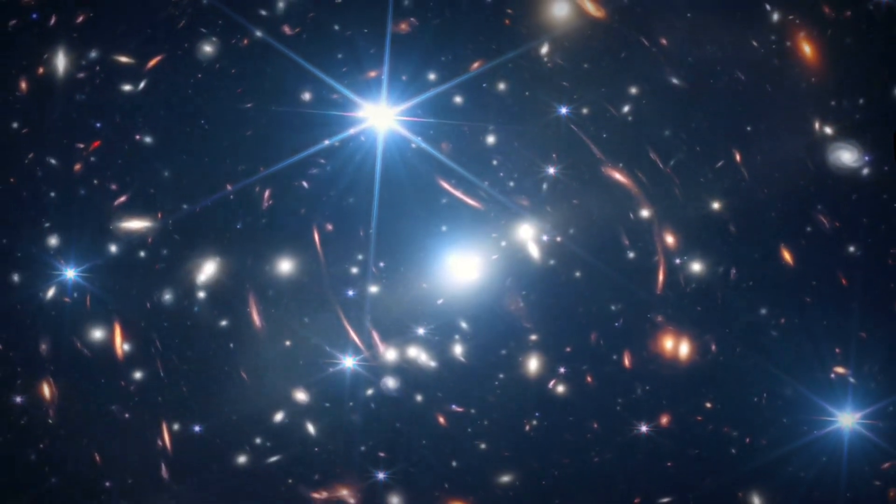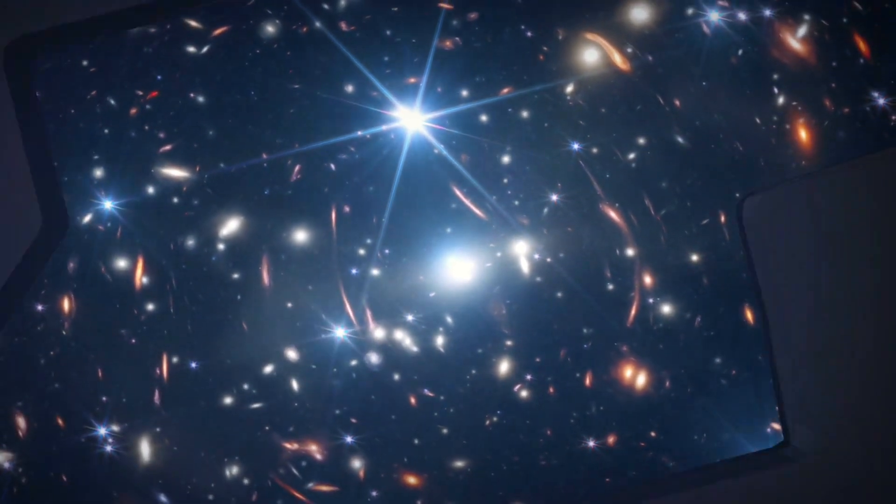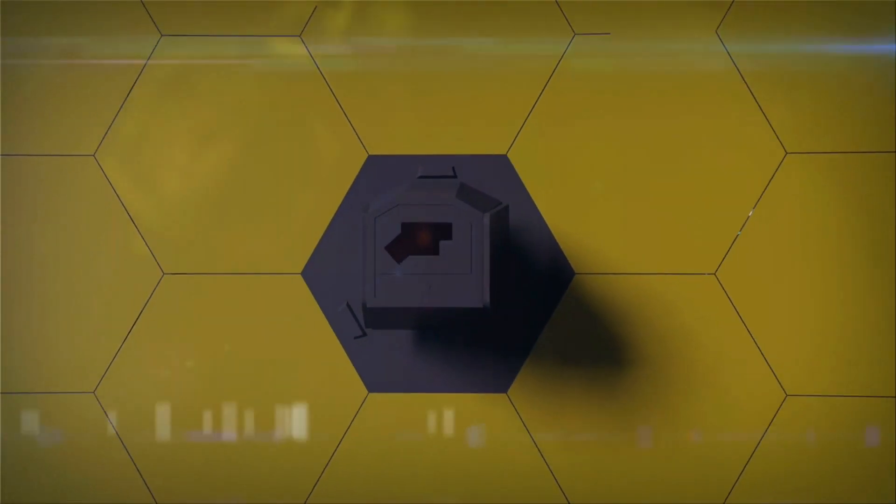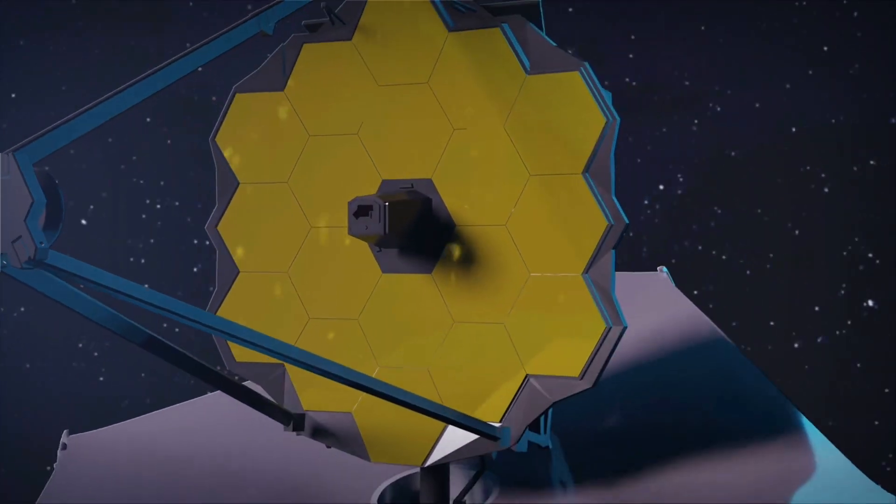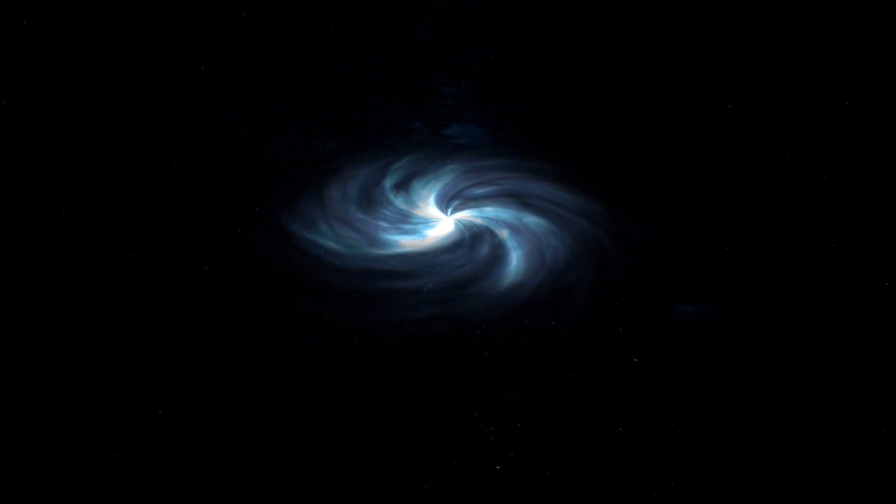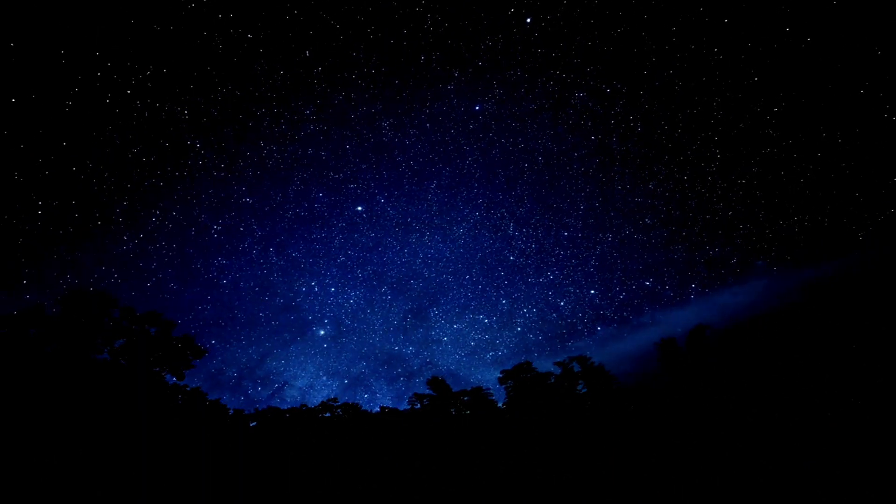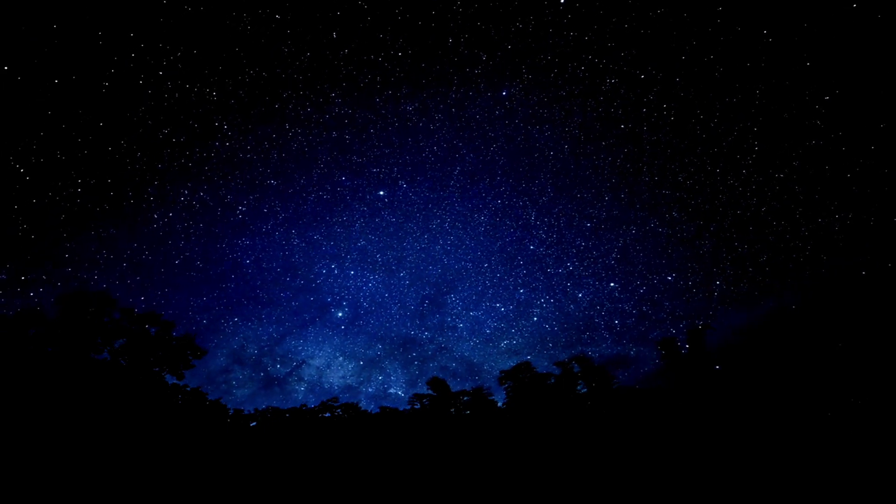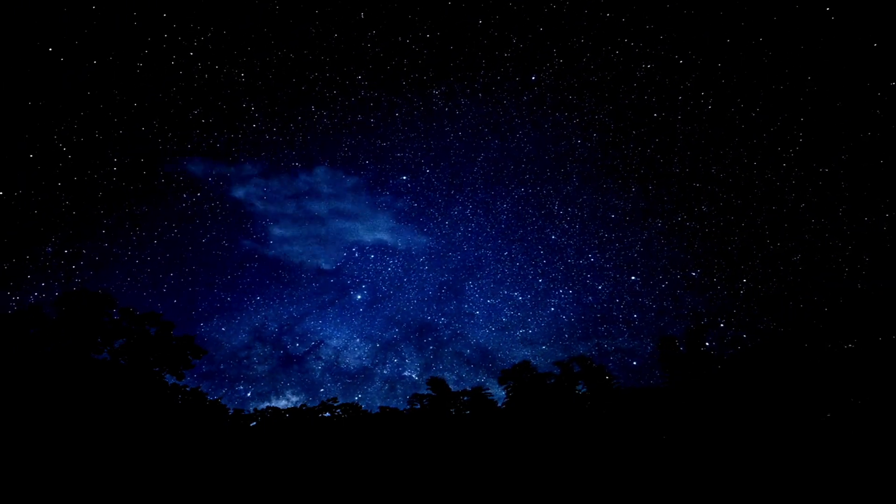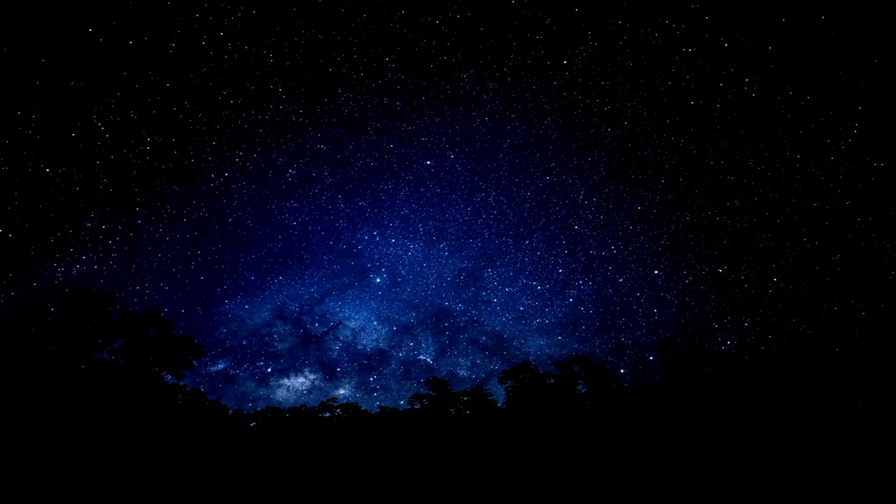Following this, a period known as the Dark Ages commenced, characterized by darkness before stars and galaxies emerged. Around 150 to 400 million years later, the universe began emerging from this darkness in a phase called re-ionization. Fast forward 9 billion years after the Big Bang, and our solar system came into existence.